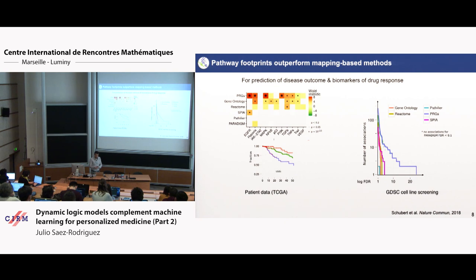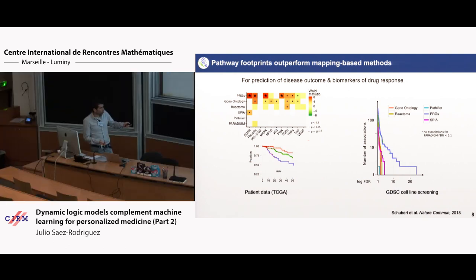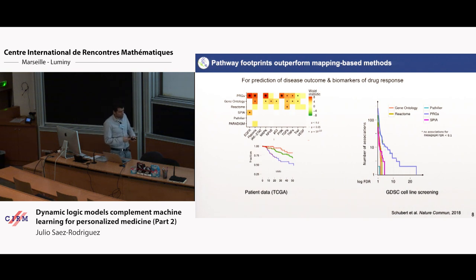Or you can go back to the cell line data. Again, using different methods — PROGENy is the one in blue — and asking: do we find relationships or associations with drug efficacy? This is the number of associations we found, as a function of statistical significance (FDR). And as you see, the footprints find more and stronger, more significant associations with drug response than looking at the genes in the pathway.